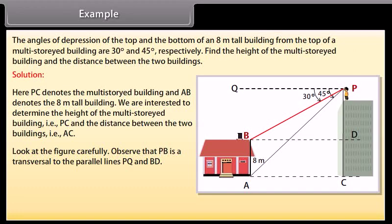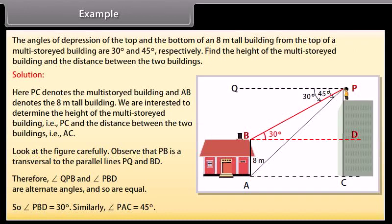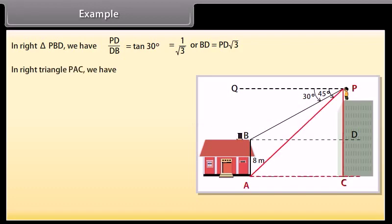Observe that PB is a transversal to the parallel lines PQ and BD. Therefore, angle QPB and angle PBD are alternate angles and so are equal. So, angle PBD equals 30 degrees. Similarly, angle PAC equals 45 degrees. In the right triangle PBD, we have PD upon DB equals tan 30 degrees, which equals 1 upon square root 3, or BD equals PD square root 3. In right triangle PAC, we have PC upon AC equals tan 45 degrees equals 1. That is, PC equals AC.